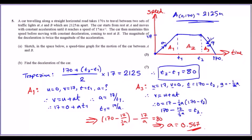Welcome to question 5. I've already solved this and I'm going to walk you through every procedure. A car is traveling along a straight horizontal road that takes 170 seconds to travel between two sets of traffic lights at A and B, which are 2,125 meters apart. Let's assume point A is here and point B is there, so the total time is 170 seconds by point B.